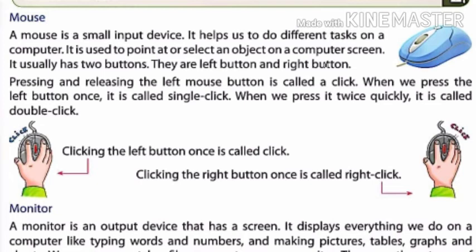You can see a picture of a mouse on your screen. The mouse generally has two buttons — the left button and the right button. Pressing and releasing the left mouse button is called a click.